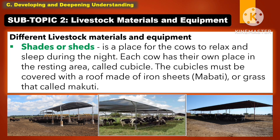Another livestock material and equipment is the shade. It is a place for the cows to relax and sleep during the night. Each cow has their own place in a resting area called a cubicle. The cubicles must be covered with a roof made of iron sheets or grass, called makuti.